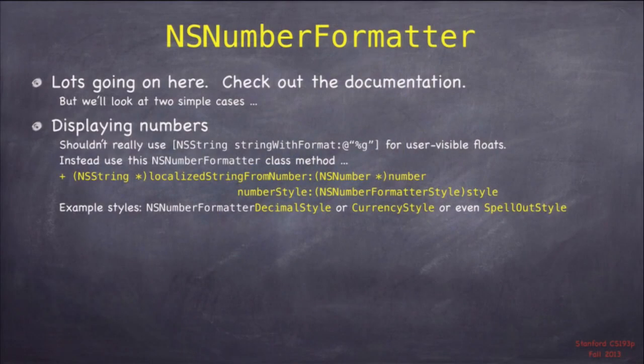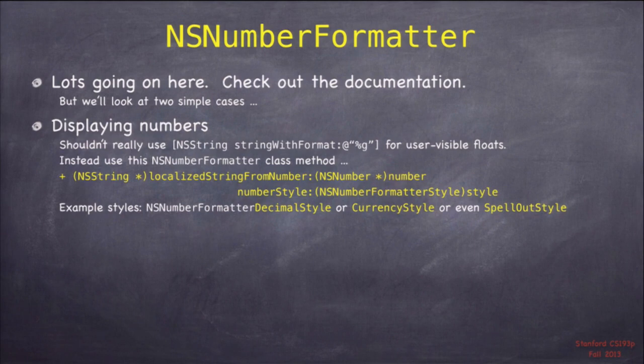For displaying numbers on screen, you don't want to use string format with %g. What you want to use is the method in NSNumberFormatter called 'localizedStringFromNumber:numberStyle:'. There are different number styles like decimal and spell out — spell out will take 4 and say 'four'. That gives you back a string appropriate for the locale you're in. A large number like one thousand in the U.S. might be '1,000.00', whereas in Great Britain it'd be '1.000,00'. For parsing numbers, you should use NSNumberFormatter too — create a formatter, set the style, and call 'numberFromString:' to get an NSNumber back.